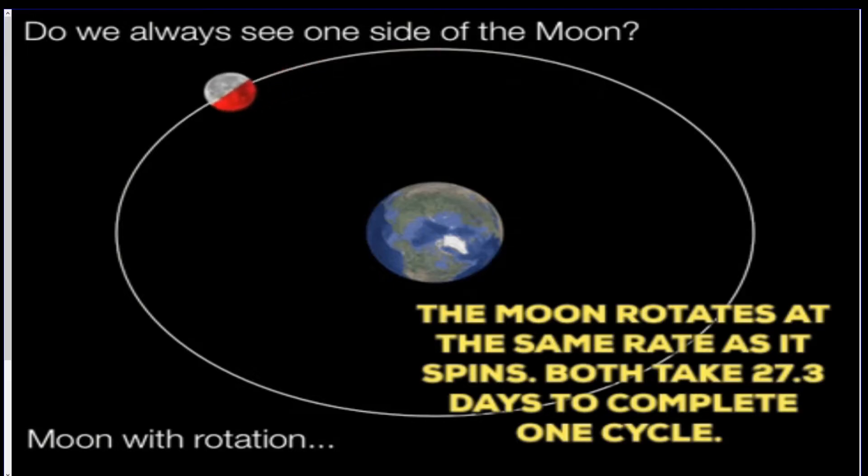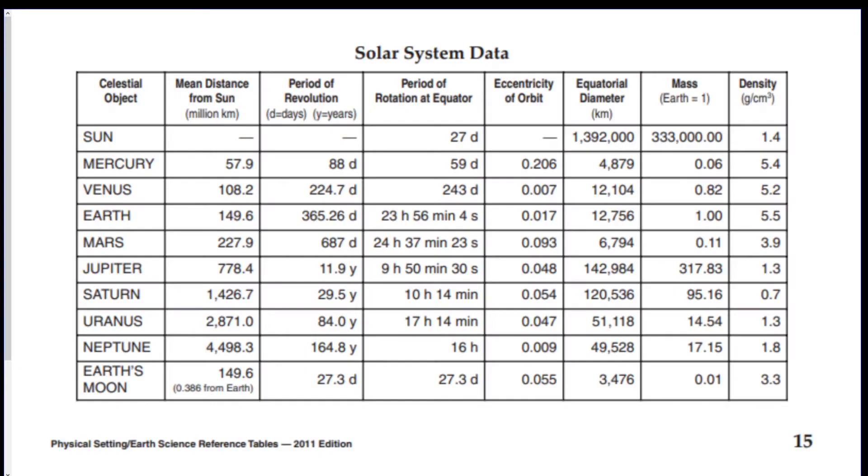A little fun fact about the Moon is that the rotation speed is equal to its period of revolution. If you look at this picture, the red side of the Moon is always facing the Earth. So we actually only see one side of the Moon at all times. This is given to you right here on the reference table on page 15. You can see right here, the period of revolution of the Moon is equal to its period of rotation. This is why we always see the same side.